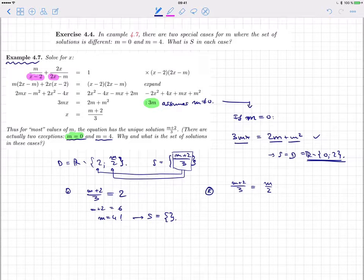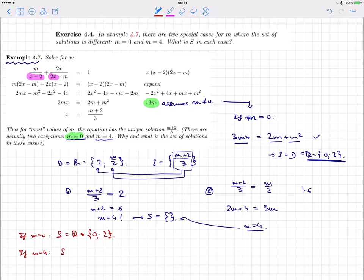And in the second case, M plus 2 over 3 equals M over 2, so M equals 3M. We still get M equals 4. So in summary, you can write the following: if M equals 0, we get as the set of solutions all of R except 0 and 2. If M equals 4, there are no solutions.